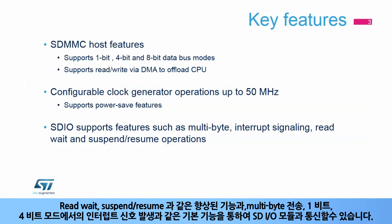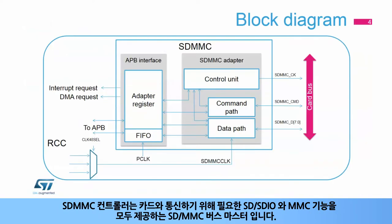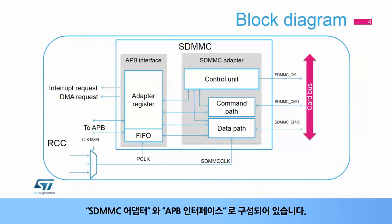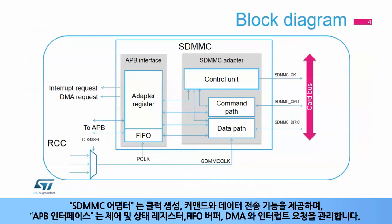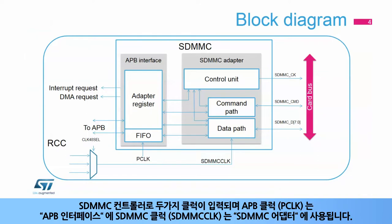The SDMMC controller is an SDMMC bus master that provides all SD, SDIO, and MMC functions needed to interface with cards. It consists of an SDMMC adapter and an APB interface. The SDMMC adapter provides functions such as clock generation, command, and data transfer, while the APB interface manages the control and status registers, FIFO buffers, as well as DMA and interrupt requests. Two clocks are available: the APB clock (PCLK) for the APB interface, and the SDMMC clock (SDMMC CLK) for the SDMMC adapter.